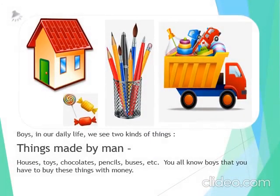Now, look at the picture in front of you. In our daily life, we see two kinds of things. Things made by man like houses, chocolates, the pencils that you see in the stand, the brush. Then you will see the toy truck and some toys in it. All these things are made by man. But do you know you have to buy these things? And to buy these things, you need money.